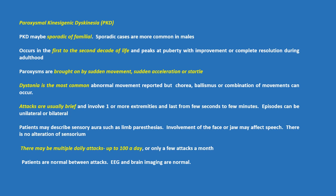Dystonia is the most common abnormal movement reported, but chorea, ballismus or a combination of movements can occur. Attacks are usually brief and involve one or more extremities, lasting from a few seconds to a few minutes. Episodes can be unilateral or bilateral. Patients may describe sensory aura such as limb paresthesias. Involvement of the face or jaw may affect speech. There is no alteration of sensorium.